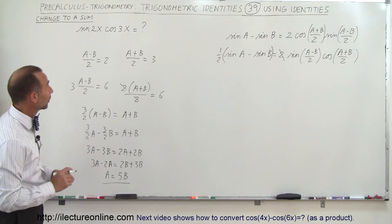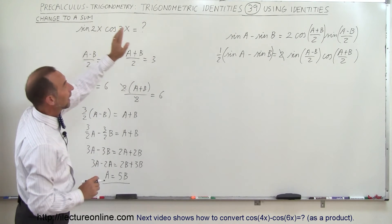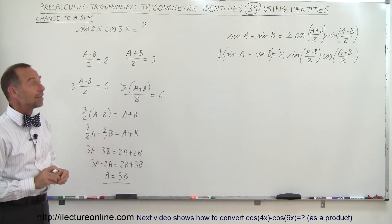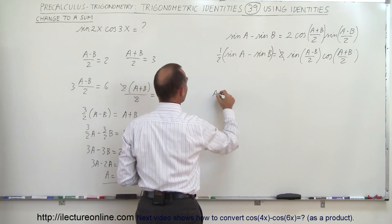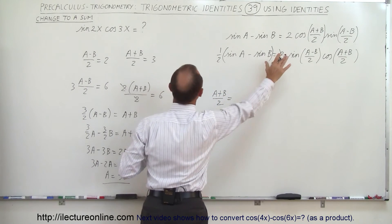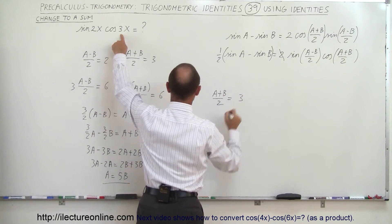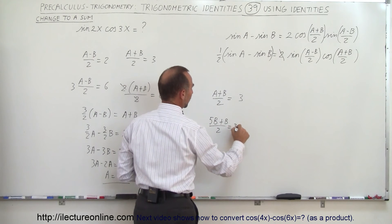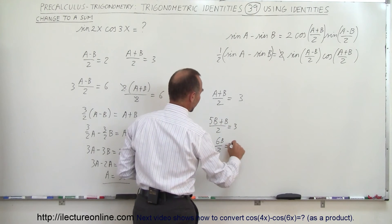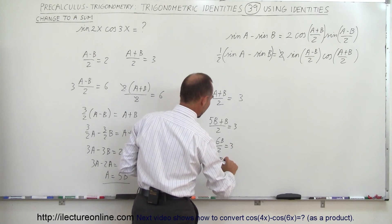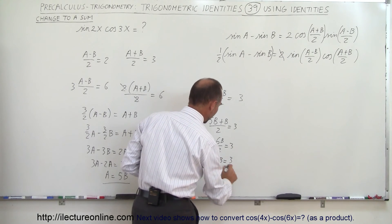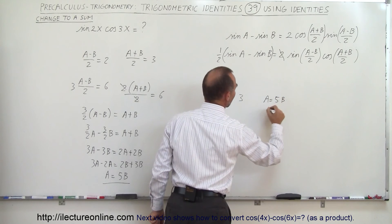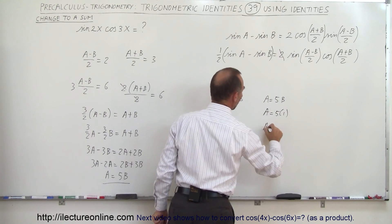Coming back over here, recalling that (a plus b)/2 equals 3 and (a minus b)/2 equals 2, and that a equals 5b. I can substitute into the first equation: (5b plus b)/2 equals 3, so 6b/2 equals 3, so 3b equals 3, so b equals 1. And since a equals 5b, a equals 5 times 1, so a equals 5.